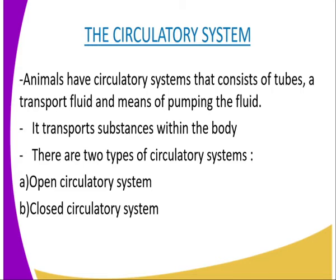There are two types of circulatory systems which exist in animals: the open and the closed circulatory system, and we are going to discuss them in this lesson. In an open circulatory system, the transport fluid is not confined to blood vessels but is contained in the general body cavity, known as the haemocoil. The transporting fluid in this open circulatory system is known as haemolymph, and the open circulatory system is found in invertebrates, especially the arthropods.